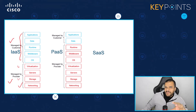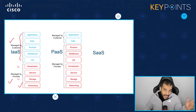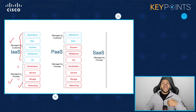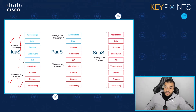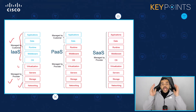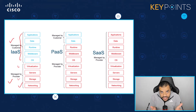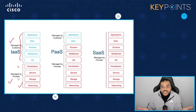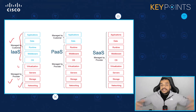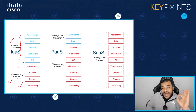With software as a service, the service provider is actually managing everything for you, including the applications and data as well. Everything is being managed by the service provider. The provider is offering you a bunch of applications that you will enjoy without even having to worry about how those applications were installed, on top of which operating system, or on top of which hardware or virtualization machines. Just consume the software — that's it. That's what we call the cloud service models.